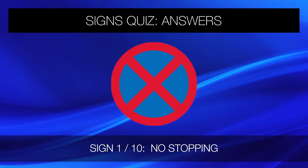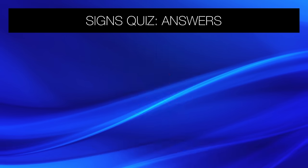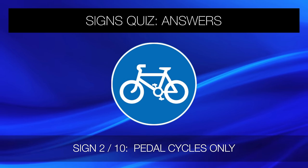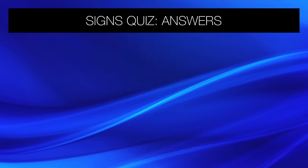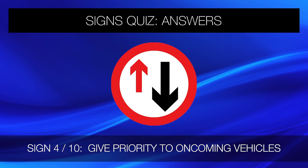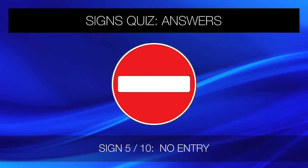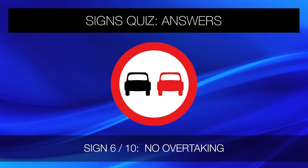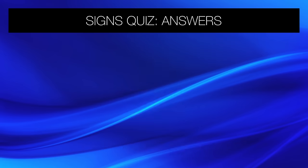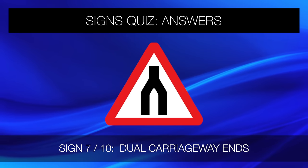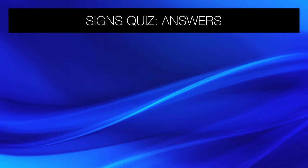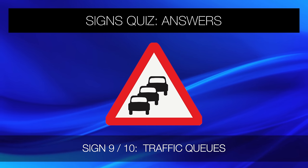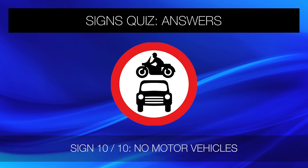No stopping. Pedal cycles only. Keep left. Give priority to oncoming vehicles. No entry. No overtaking. Dual carriageway ends. Side winds. Traffic queues. No motor vehicles.